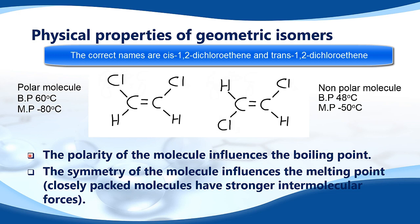The polarity of the molecule influences the boiling point. The cis isomer has a higher boiling point than the trans isomer, due to the intermolecular forces. Because it is a polar molecule, we have dipole-dipole attractions between molecules. On the non-polar trans isomer, the strongest intermolecular forces are van der Waals forces, which are weaker than dipole-dipole attractions, so it has a lower boiling point.